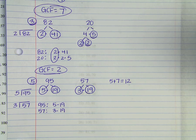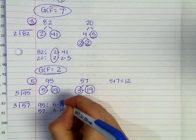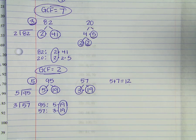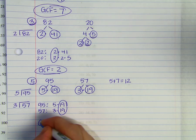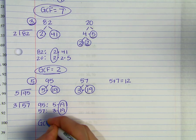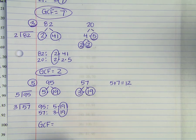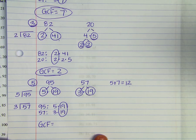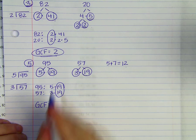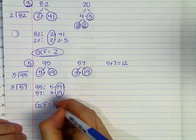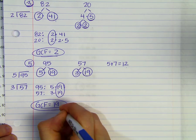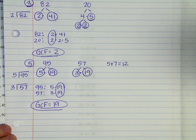Last step: circle the factors found in both lists. Both lists have a 19 and that's it. So the greatest common factor, or GCF, of 95 and 57 is just 19.